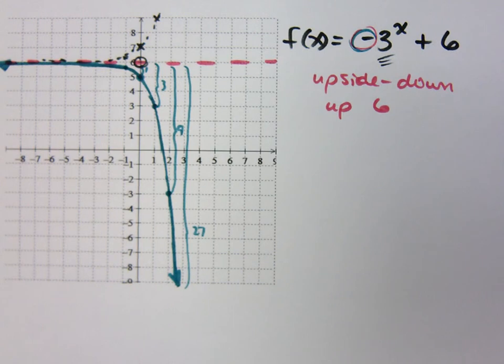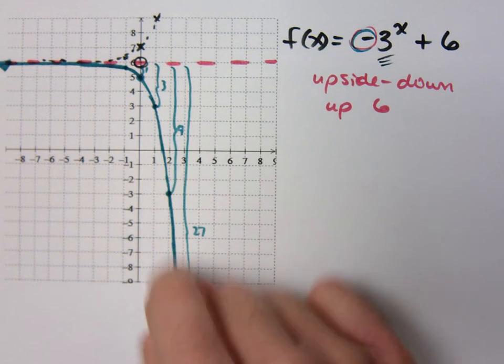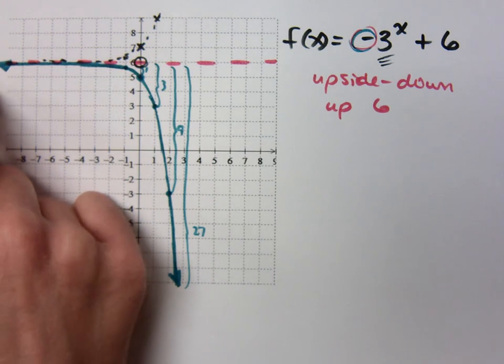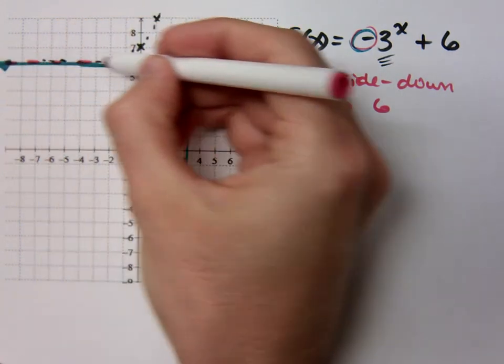And then what it looks like to the right or the left is going to be based off of this guy. Multiplying times 3 as I go up here. Dividing by 3 as I go to the left. But that distance, that distance is going to be based on how far are you from your horizontal asymptote.